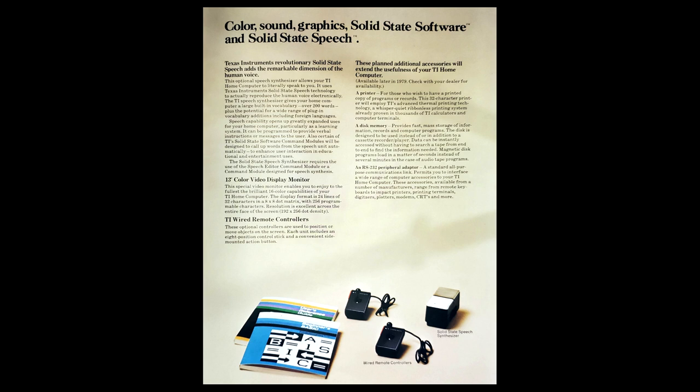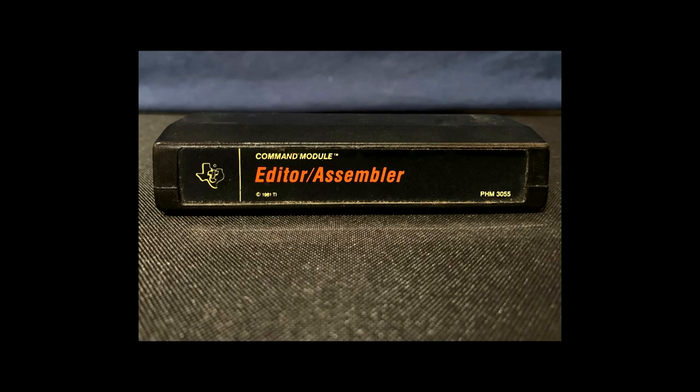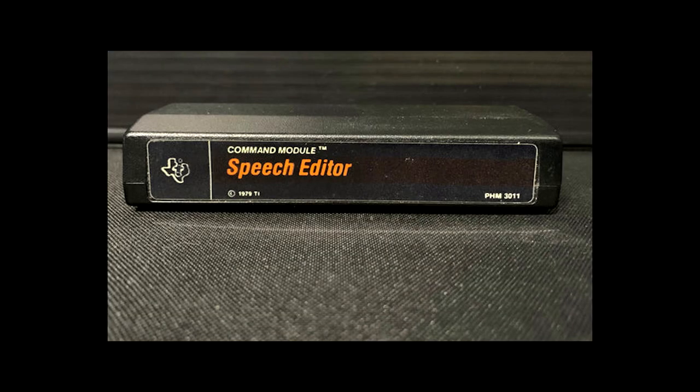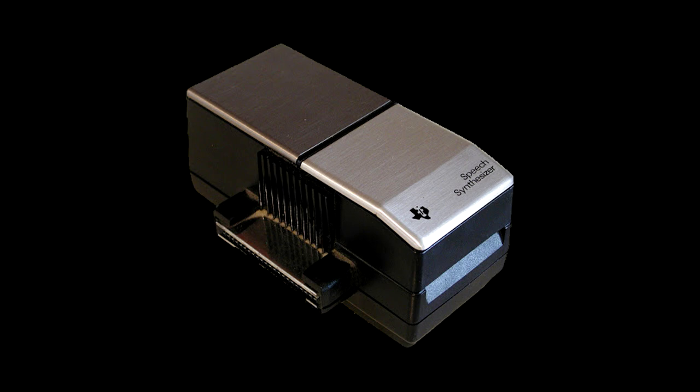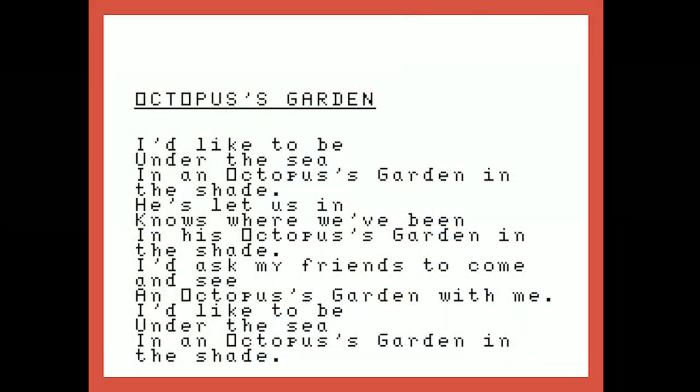Given the success TI was having with speech tech, making speech a selling point for the TI home computer just made sense, with TI's first promo materials for the 99-4 putting speech front and center as a highlight of the system. And just emphasizing how big a focus there was on speech, the first software TI sold home users to expand the TI-99's programming possibilities wasn't Extended Basic or Editor Assembler — it was Speech Editor, a dedicated cart adding speech to TI Basic. None of the first-gen TI software released before Speech Editor actually supported speech, so without Speech Editor, your $150 solid state speech synthesizer was basically just a shiny little box whose purpose was to look kind of snazzy sitting next to a TI-99.